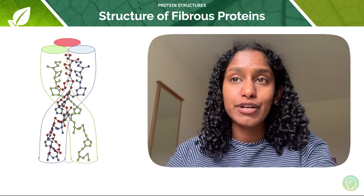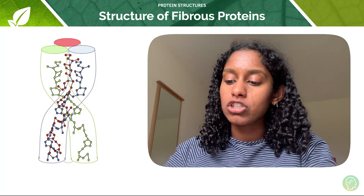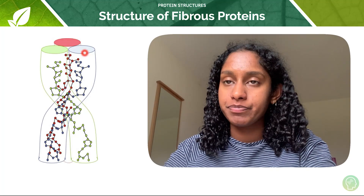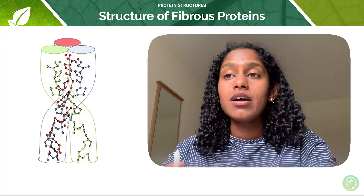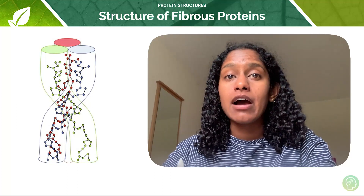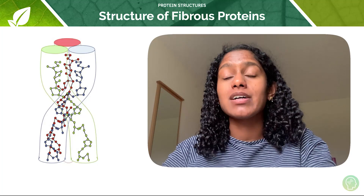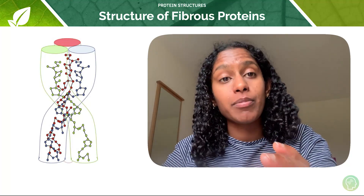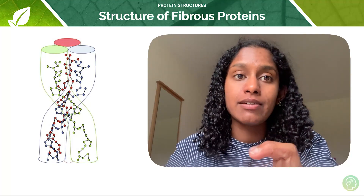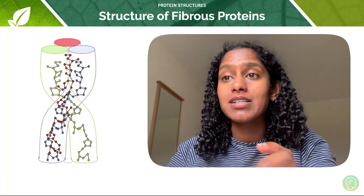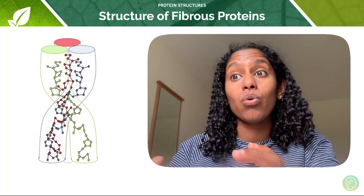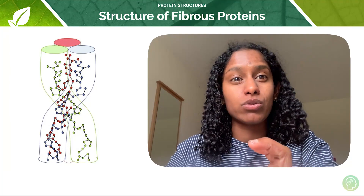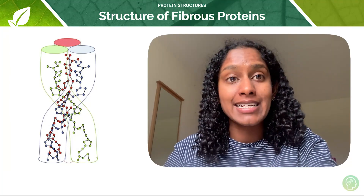Fibrous proteins are long chains made up of long polypeptide chains that twist together, as you can see in this diagram. They are water-insoluble because the hydrophobic parts are not folded away. In globular proteins the hydrophobic parts are folded inside while the hydrophilic parts are on the outside, making them soluble. In fibrous proteins, the hydrophilic parts are not on the outside — there are lots of hydrophobic, water-hating parts on the outside — which means these molecules are not very water-soluble.